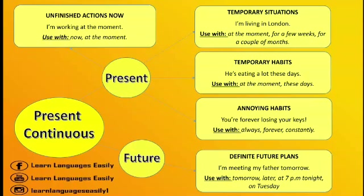Unfinished actions now — for example: I am working at the moment. Use with words like 'now' or 'at the moment.' Temporary situations — for example: I am living in London. Use with phrases like 'at the moment,' 'for a few weeks,' 'for a couple of months.' For temporary habits — for example: What is he eating these days? He is eating a lot these days. We also use it to describe annoying habits: You are forever losing your keys. We use words like 'always,' 'forever,' and 'constantly.'